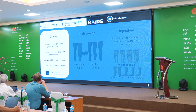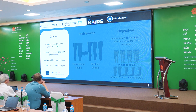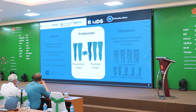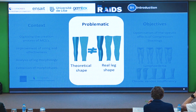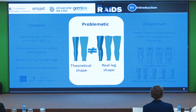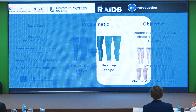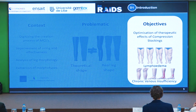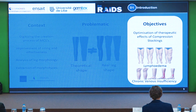This project focuses on digitizing the creation process of clinical compression structures to improve their design and effectiveness. It involves analyzing the morphology of a large population to extract significant leg shapes and value-predictive morphotypes. Legs are currently not classified according to their specific anatomical shape, leading to a mismatch between theoretical sizing and real leg shapes, which hinders the creation of accurate medical compression structures. Our main objective is to improve medical compression stocking design by considering individual leg morphology and optimizing the therapeutic effects in treatment of venous insufficiency.